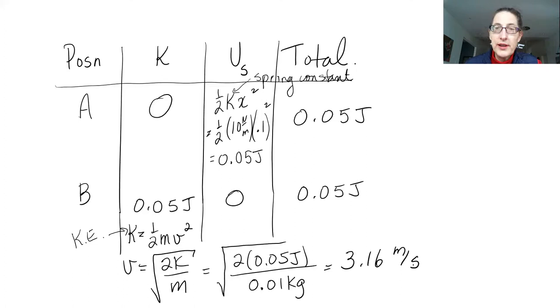A more interesting question would be if you shot the ball vertically upward — how high would it go until it runs out of kinetic energy and all of it converts to gravitational potential energy before coming back down. That might be covered in another video.